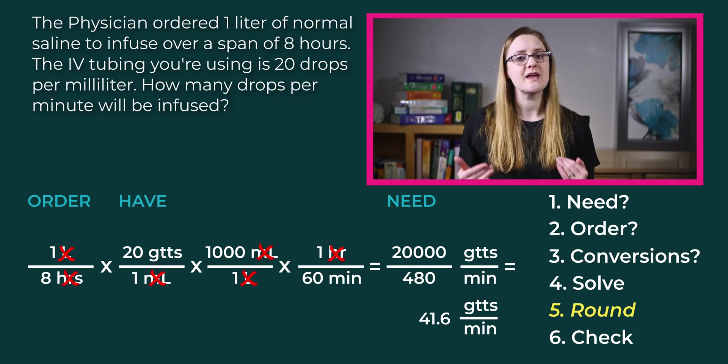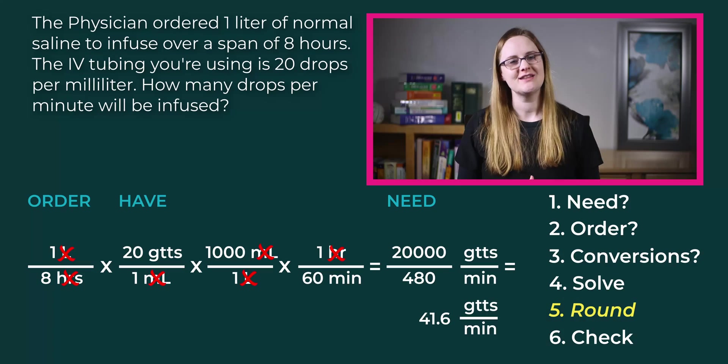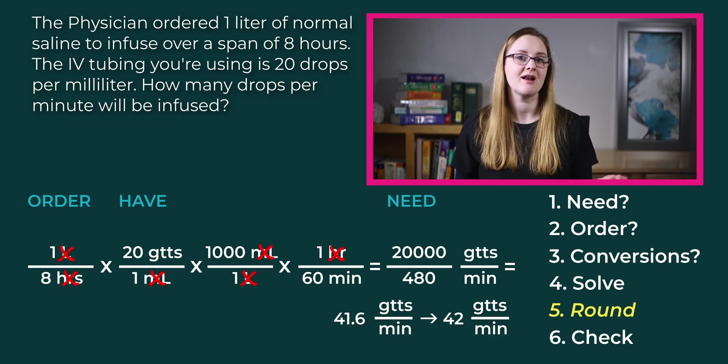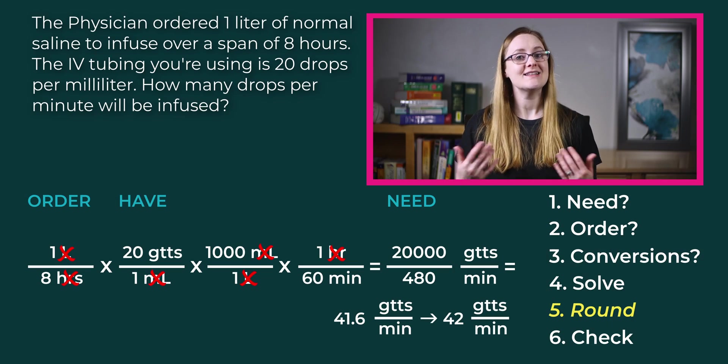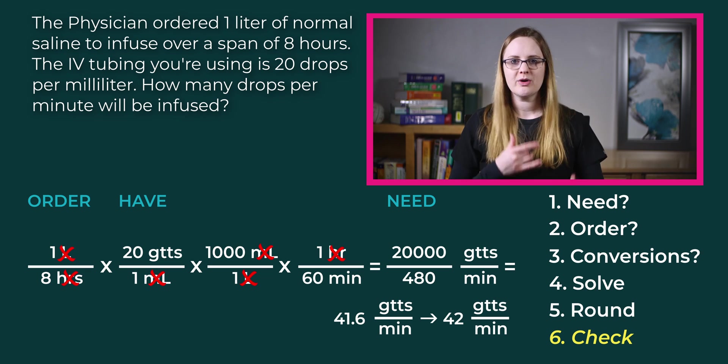Step number five is to use the correct rounding rules. When calculating drops per minute, it will always be a whole number — you cannot count 0.6 of a drop when you're watching that drip chamber. So we round 41.6 to 42 drops per minute. Remember: five and above, round up; four and below, round down. Since 0.6 is greater than five, we round up to 42. Step number six is to double-check your math and rework the problem to make sure you got it correct — dosage calculations can literally mean life or death for a patient.